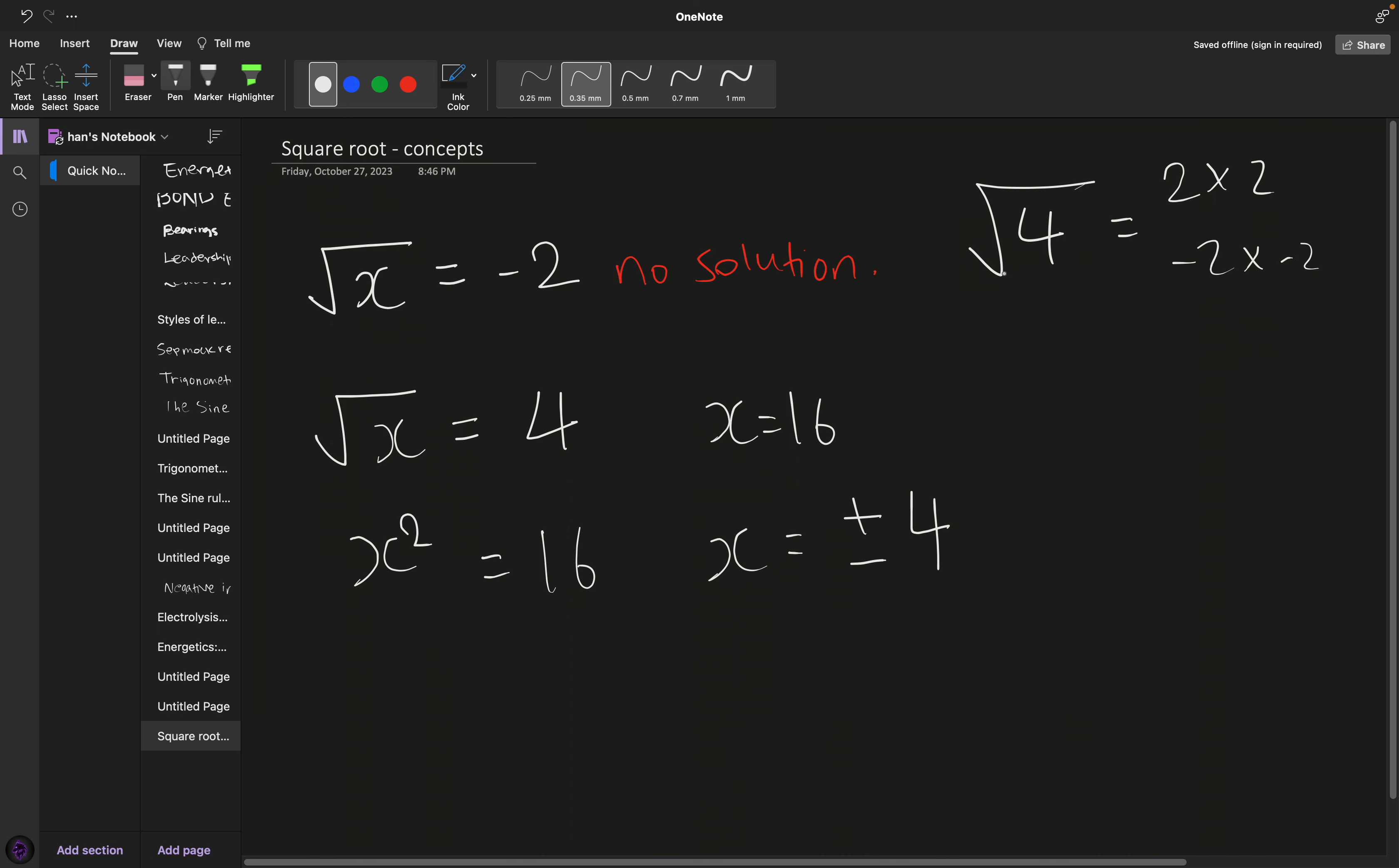Because the definition of a square root is two identical numbers that multiply to give the number under the square root. So it's either 2 times 2 or negative 2 times negative 2.